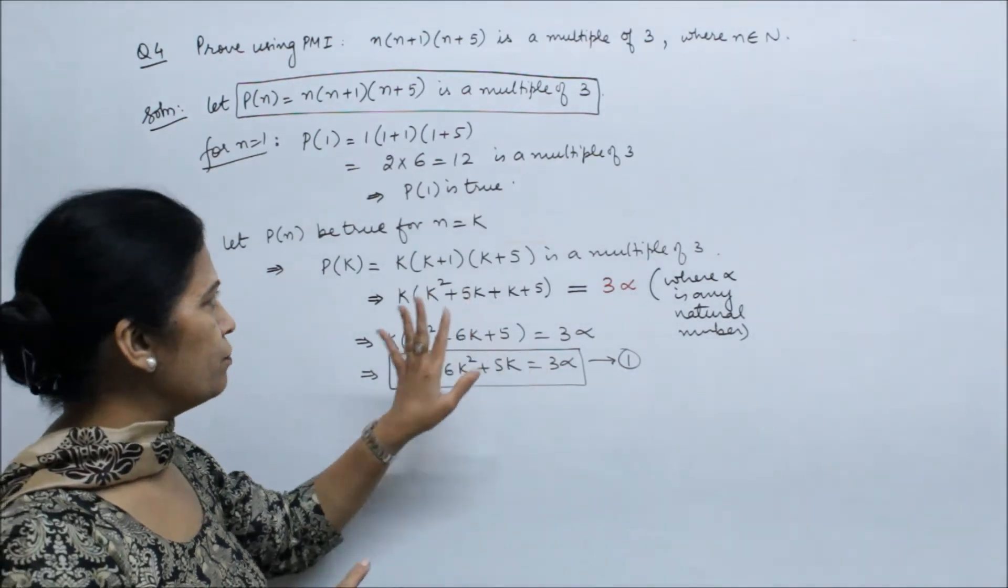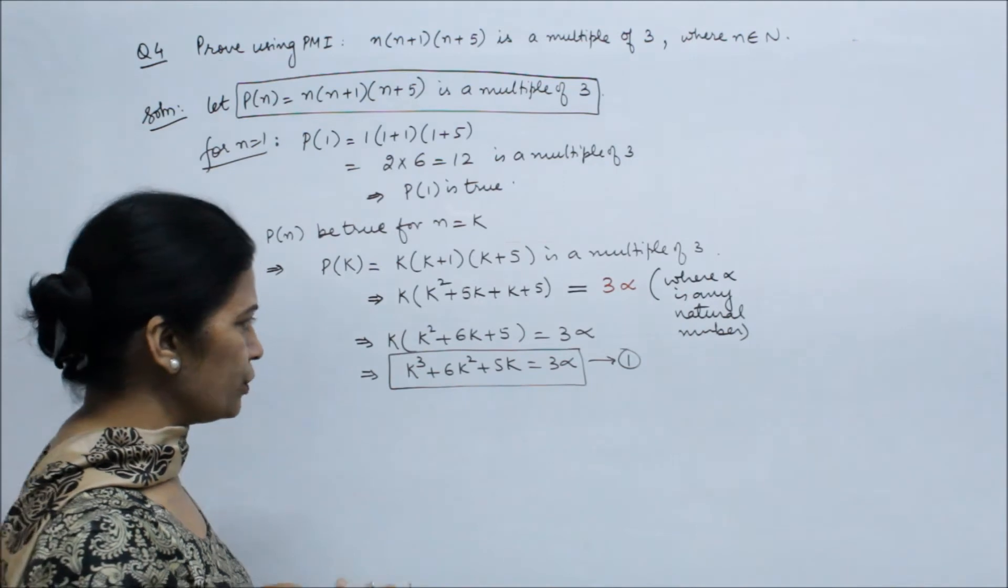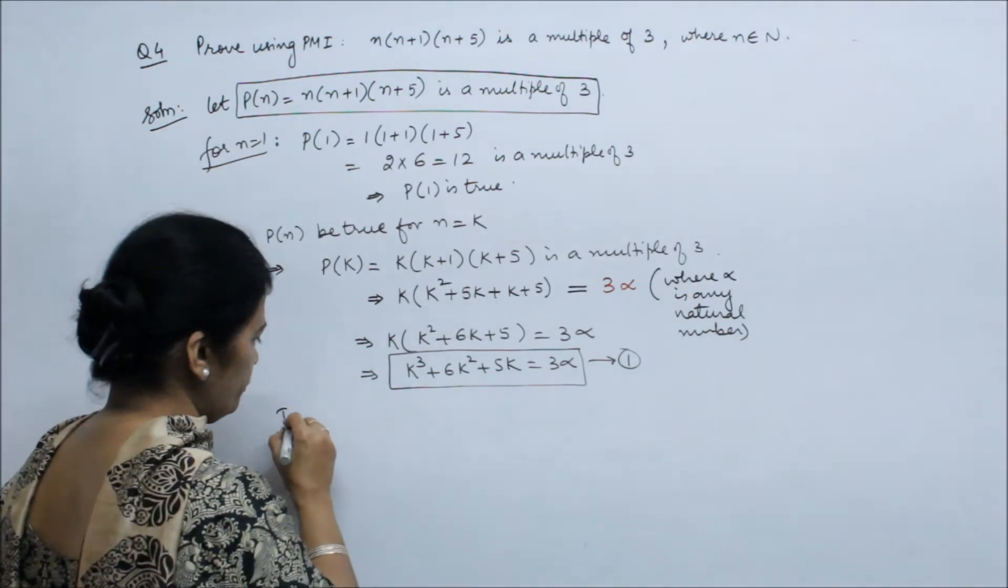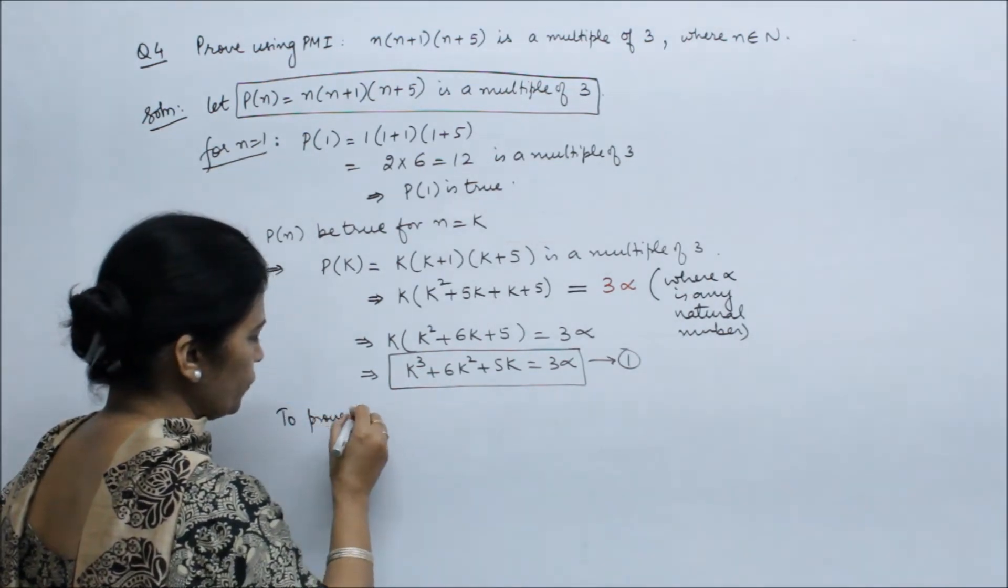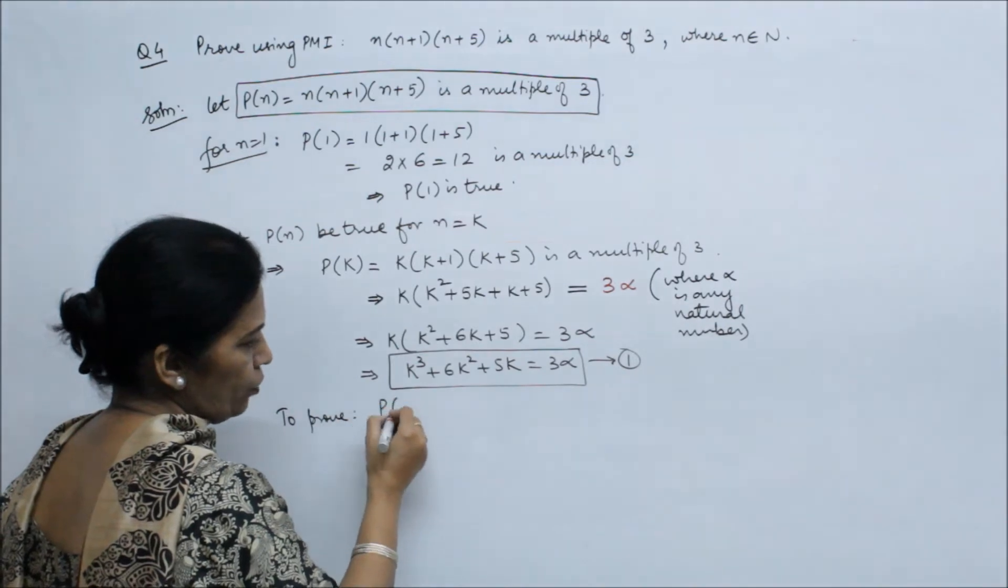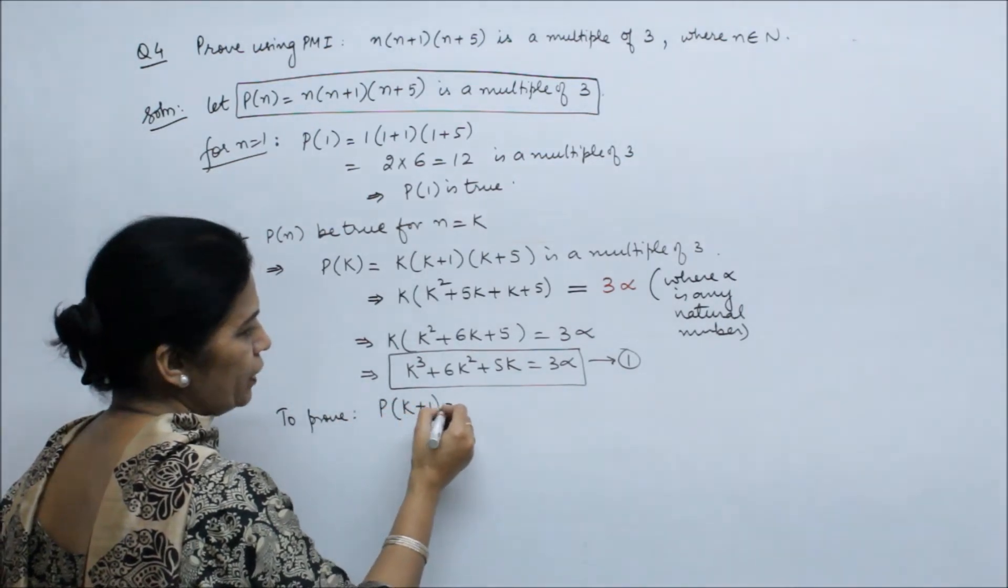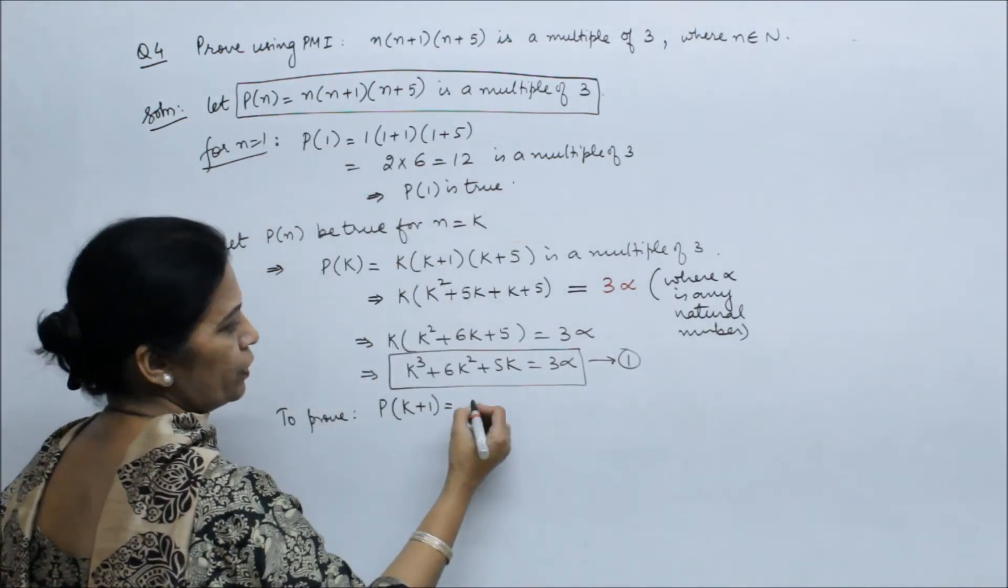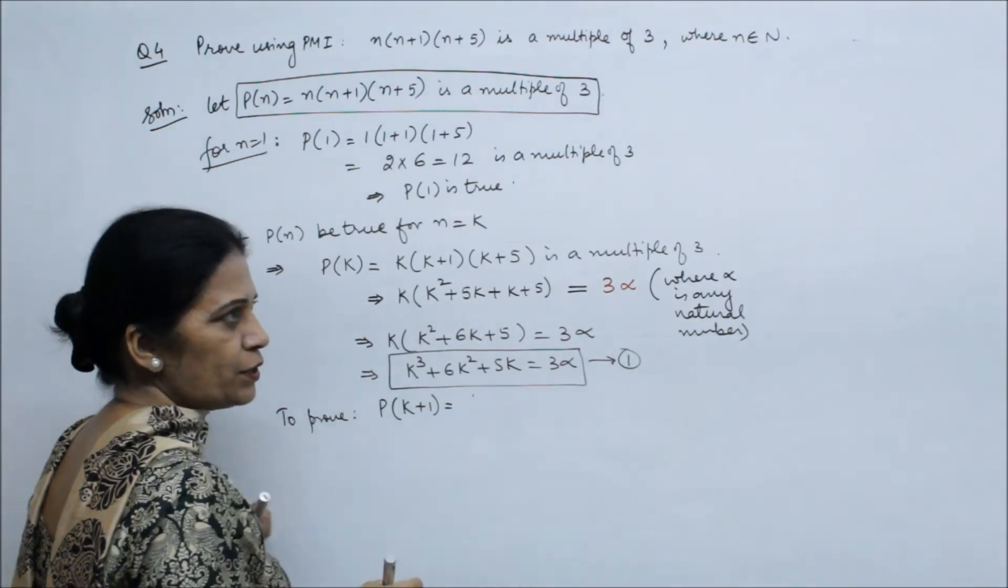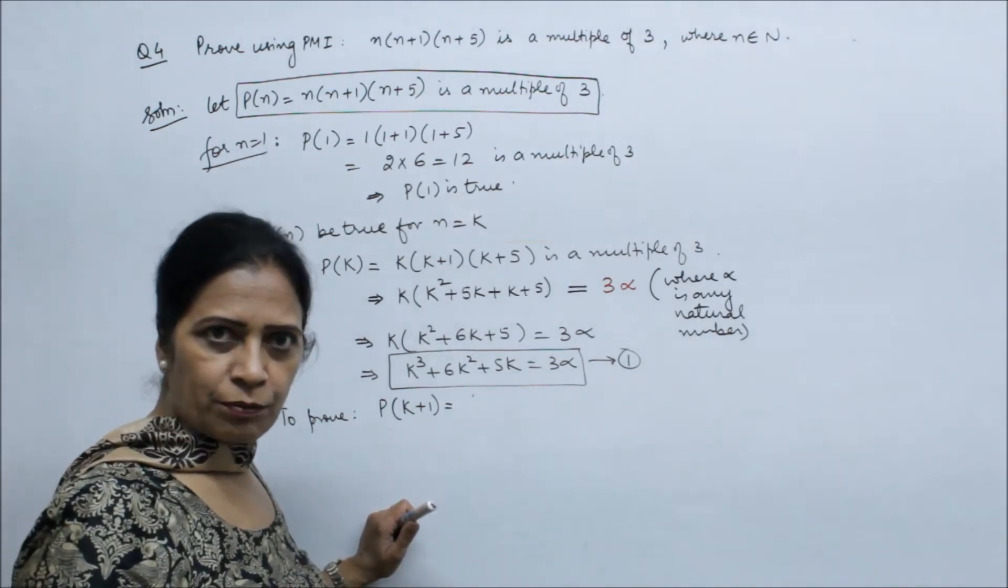So this completes the second step. Now the third one, to prove P(k plus 1). Now the third one is k plus 1. I am going to explain that where we put n equals k plus 1.